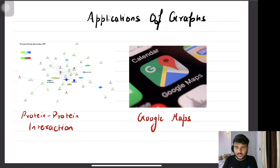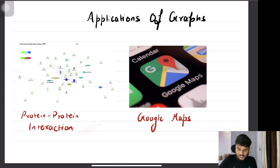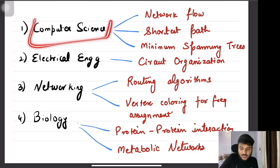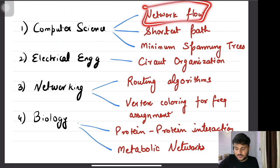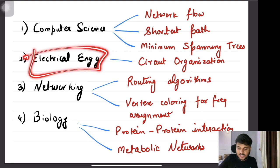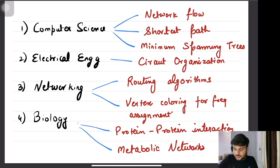Graphs are applicable in a wide variety of fields. In biology, in protein-to-protein interaction graphs you can see the application of graphs. Apart from that there are metabolic networks which also implement graphs. In computer science there are algorithms like network flow algorithms, shortest path algorithms which are used in Google Maps, and minimum spanning tree algorithms which are highly dependent on graphs. In electrical engineering, circuit organization is highly dependent on graphs. In computer networks, routing algorithms that help route packets over the network use graph algorithms. Graph problems like the vertex coloring problem are also used for frequency assignment in GSM systems.